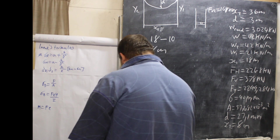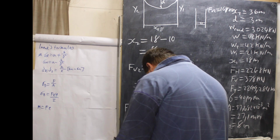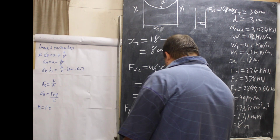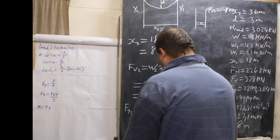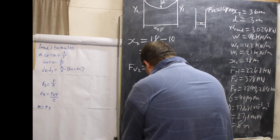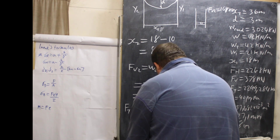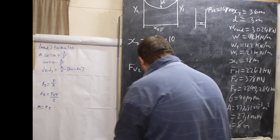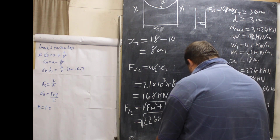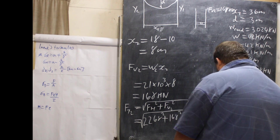FT2 equals the root of FH squared plus FV2 squared, which is the root of 2268 squared plus 168 squared. This equals 2274.214 kilonewtons. And that is the final question answered.